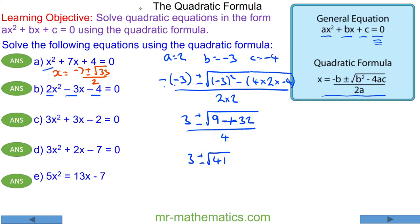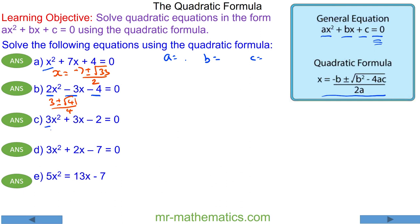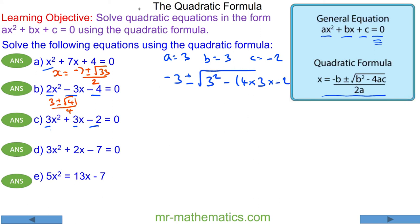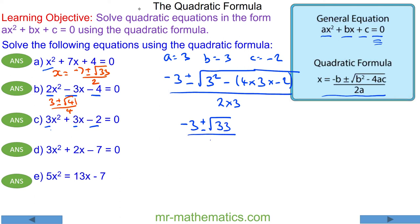For question c, a is equal to 3, b is equal to 3, and c is equal to negative 2. So we have: negative 3 plus or minus the square root of 3 squared minus 4 times a times c, all over 2 times a. That gives us negative 3 plus or minus the square root of 33 over 6.